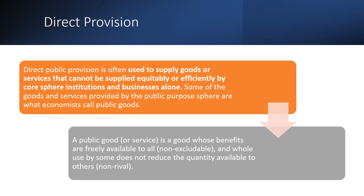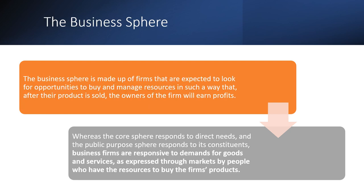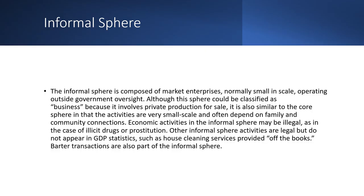Direct public provision is often used to supply goods or services that cannot be supplied equitably or efficiently by core sphere institutions and businesses alone. Some goods and services provided by the public purpose sphere are what economists call public goods — a good whose benefits are freely available to all (non-excludable) and whose use by some does not reduce the quantity available to others (non-rival). The business sphere is made up of firms that seek opportunities to buy and manage resources so that after their product is sold, the owners will earn profits. Whereas the core sphere responds to direct needs and the public purpose sphere responds to its constituents, business firms are responsive to demands expressed through markets by people who have the resources to buy the firm's products.